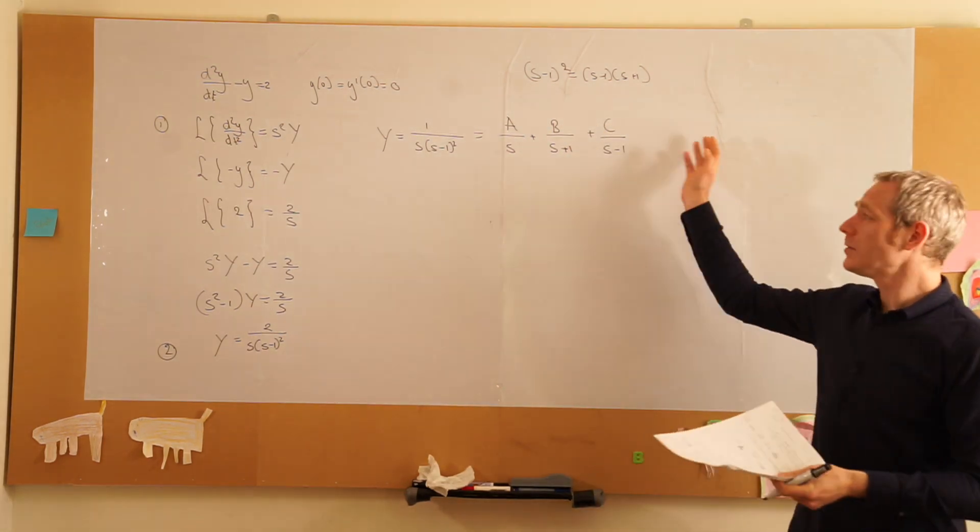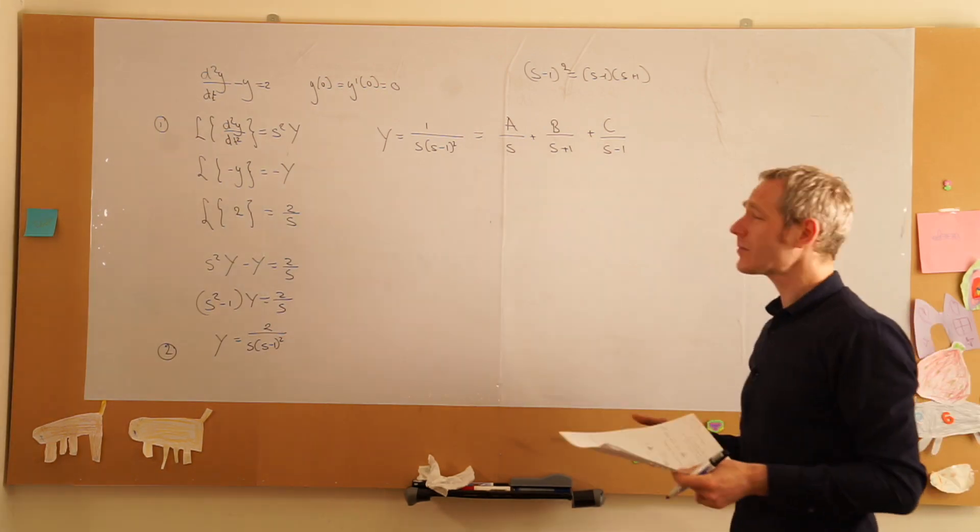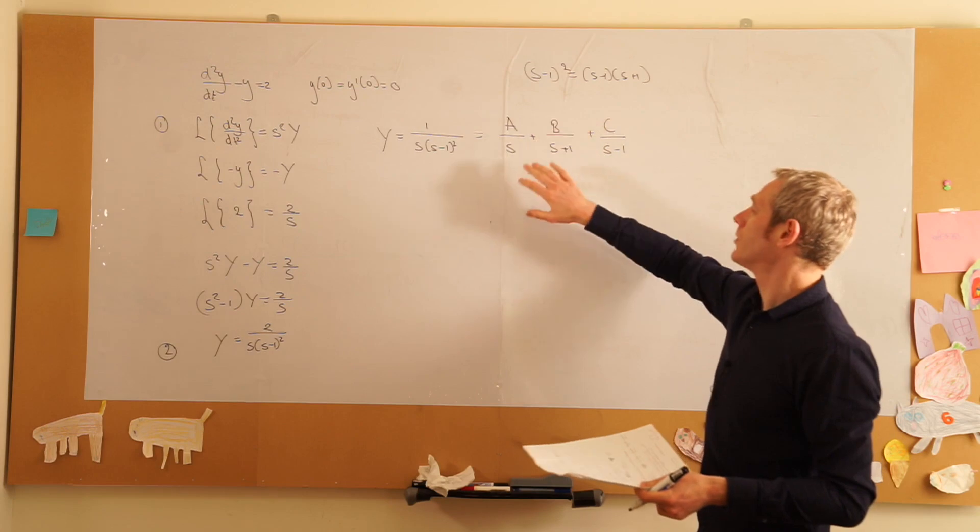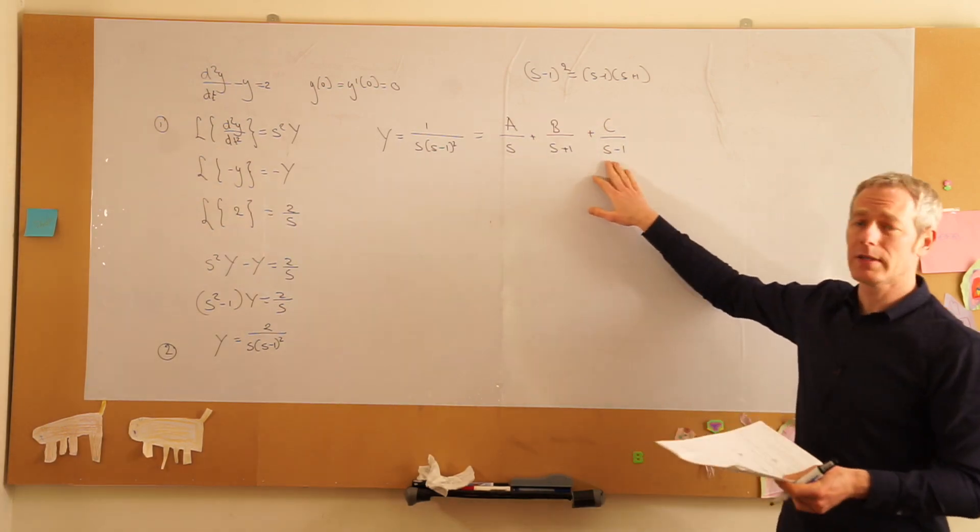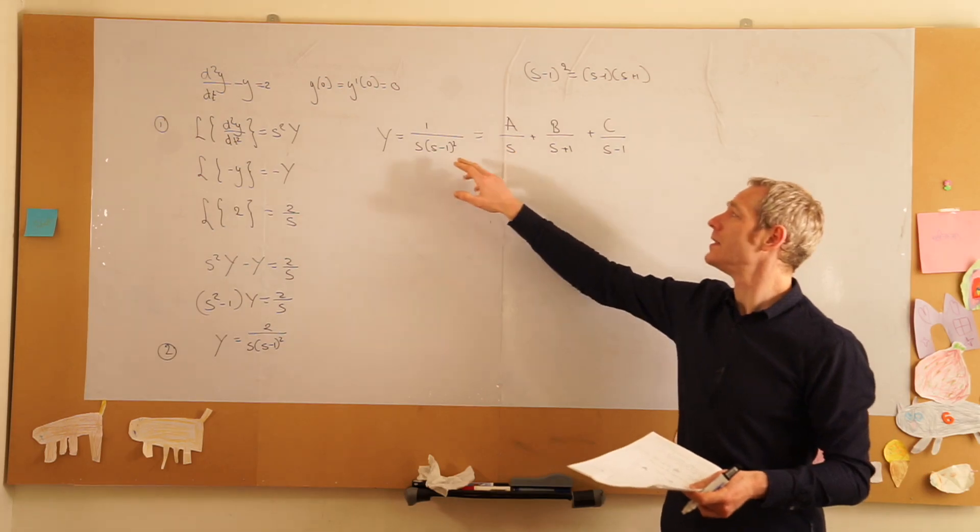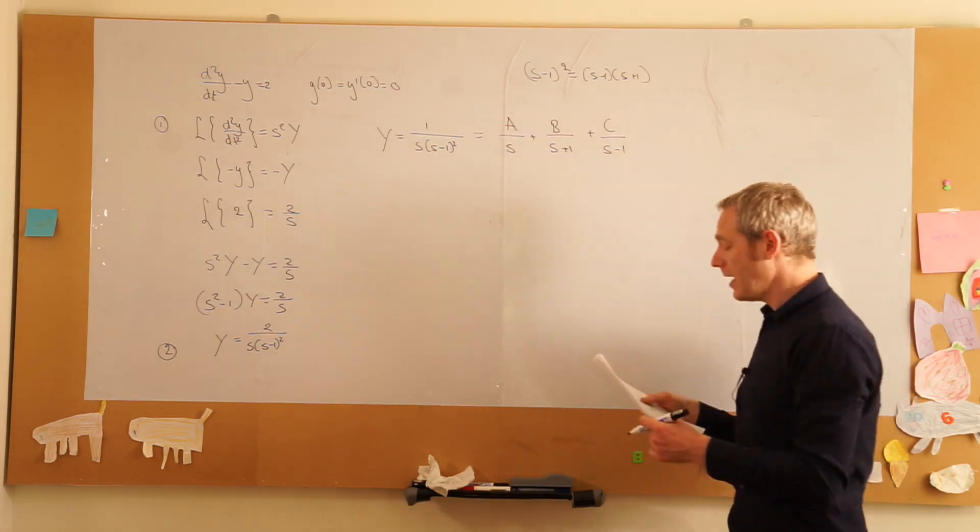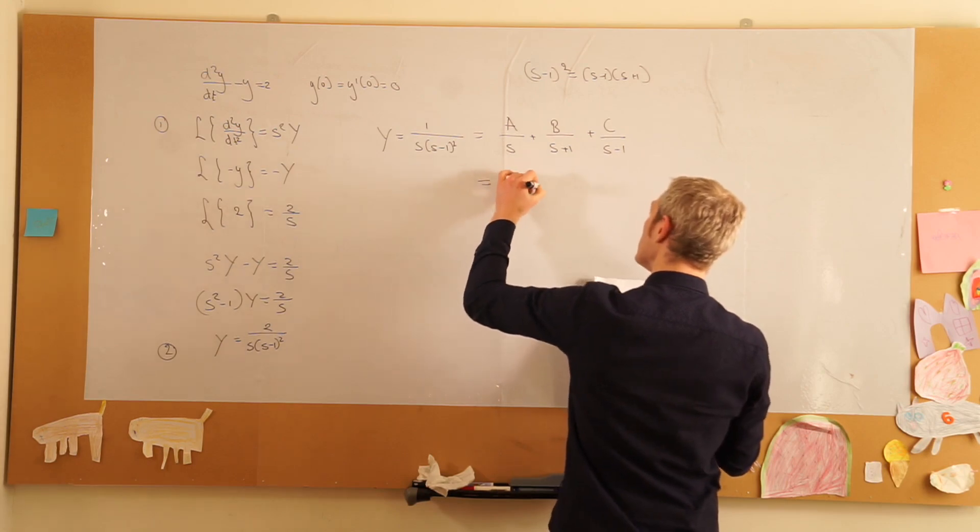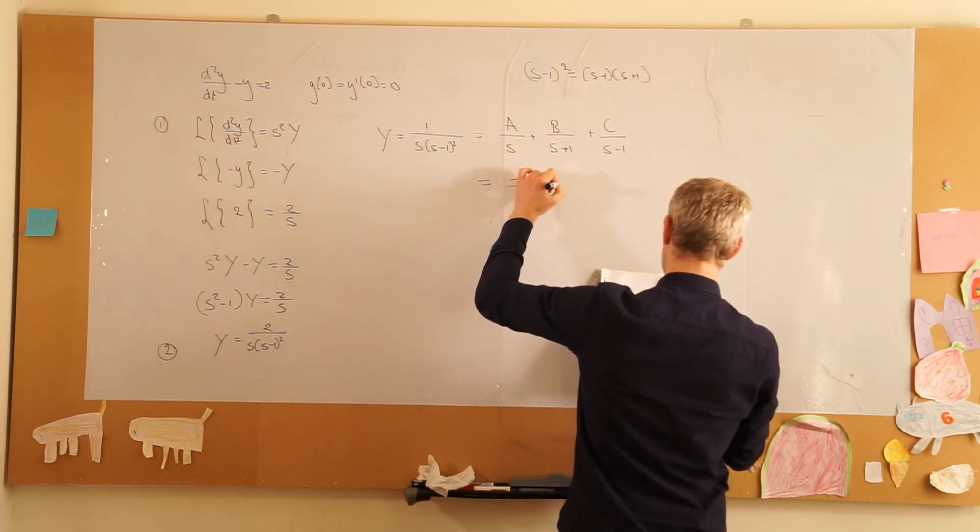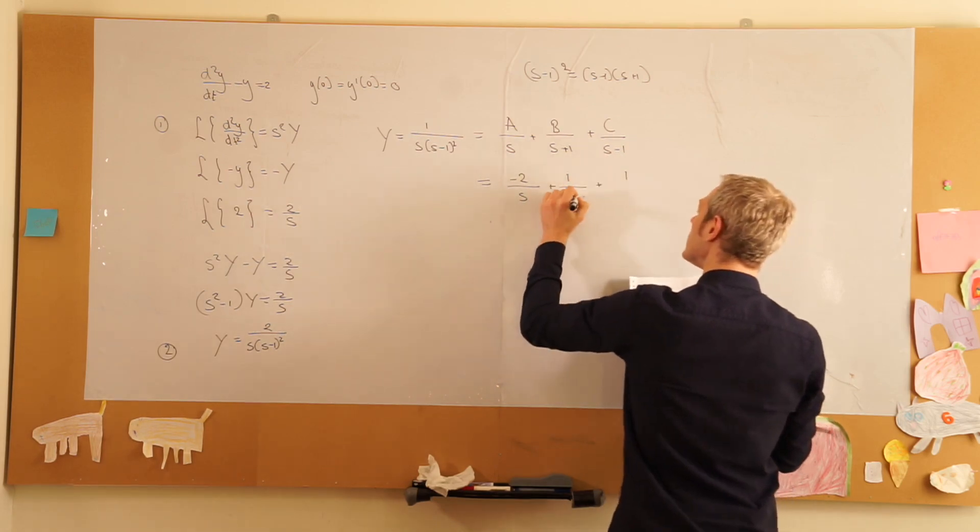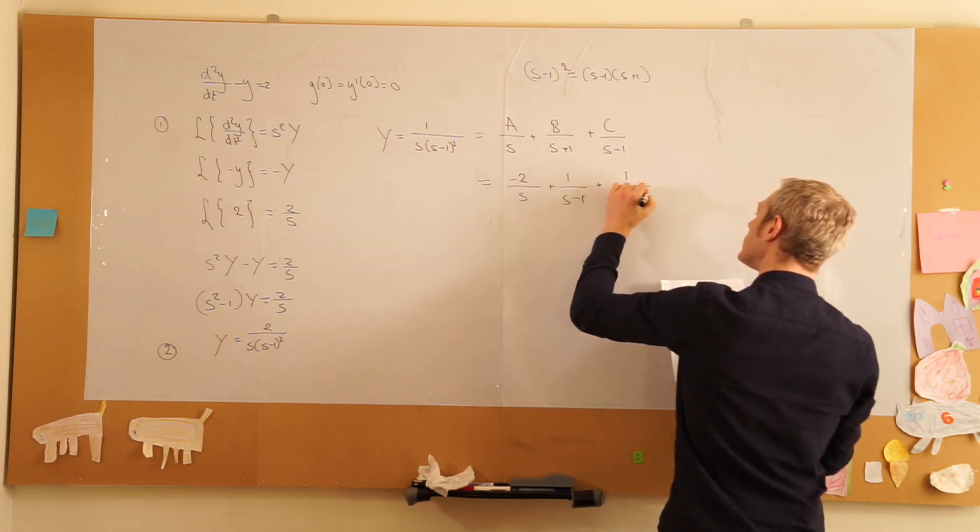And by multiplying all these again, by making the common denominator here and solving the equation, we can find a, b, and c. I won't do that here. I will just write the results, which is minus 2 over s plus 1 over (s minus 1) plus 1 over (s plus 1).